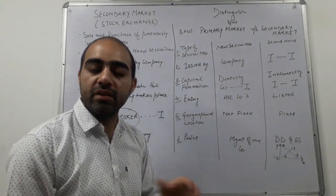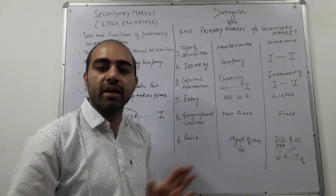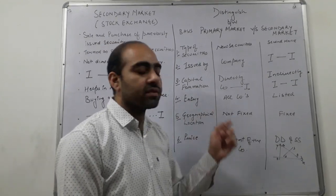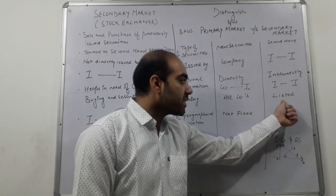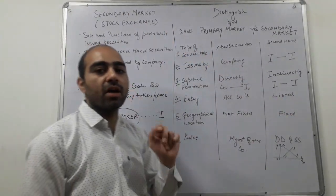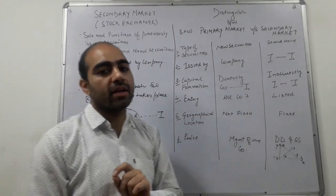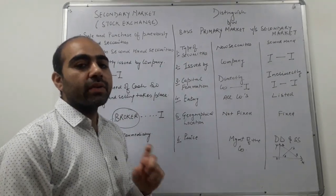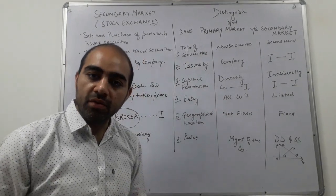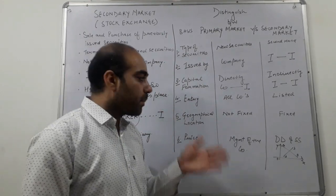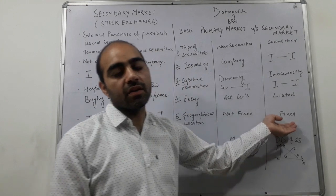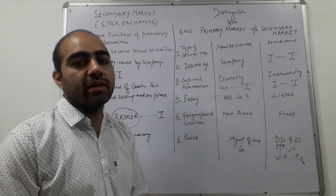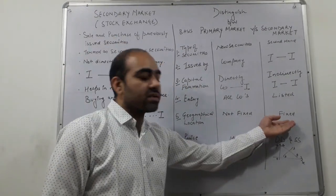The fourth point: in the primary market, all companies can enter into this market — there is no restriction. But in the secondary market, only those companies can come which are listed on the stock exchange. The fifth point is geographical location. The primary market does not have a fixed location. But in the secondary market, stock exchanges are fixed at particular places, like Bombay Stock Exchange, and there are many stock exchanges in India where buying and selling takes place.